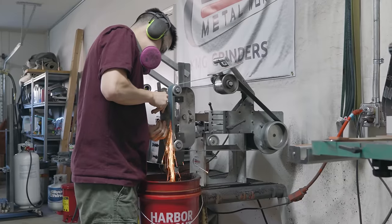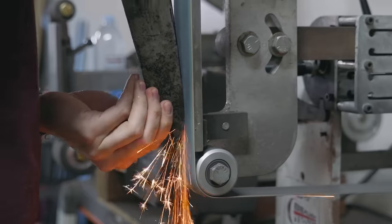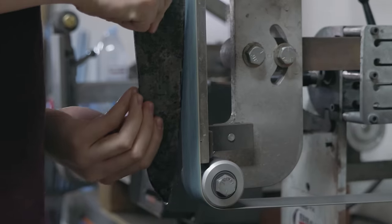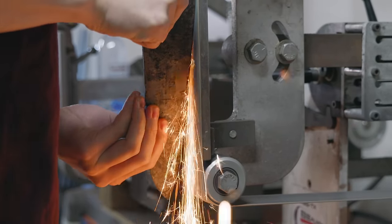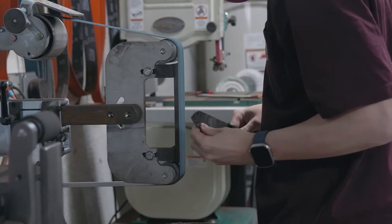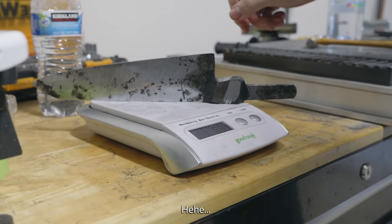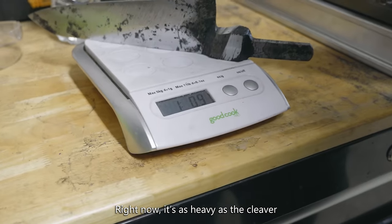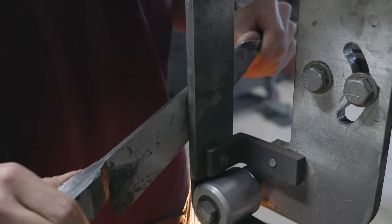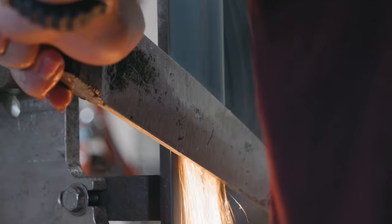I tempered the blade at 350 degrees Fahrenheit for two hours, two times. This means that the blade is sitting at around 62 to 63 Rockwell. One of the ballpark methods for determining whether your blade is hard or not is seeing whether those sparks that come off the grinder explode into mini fireworks.